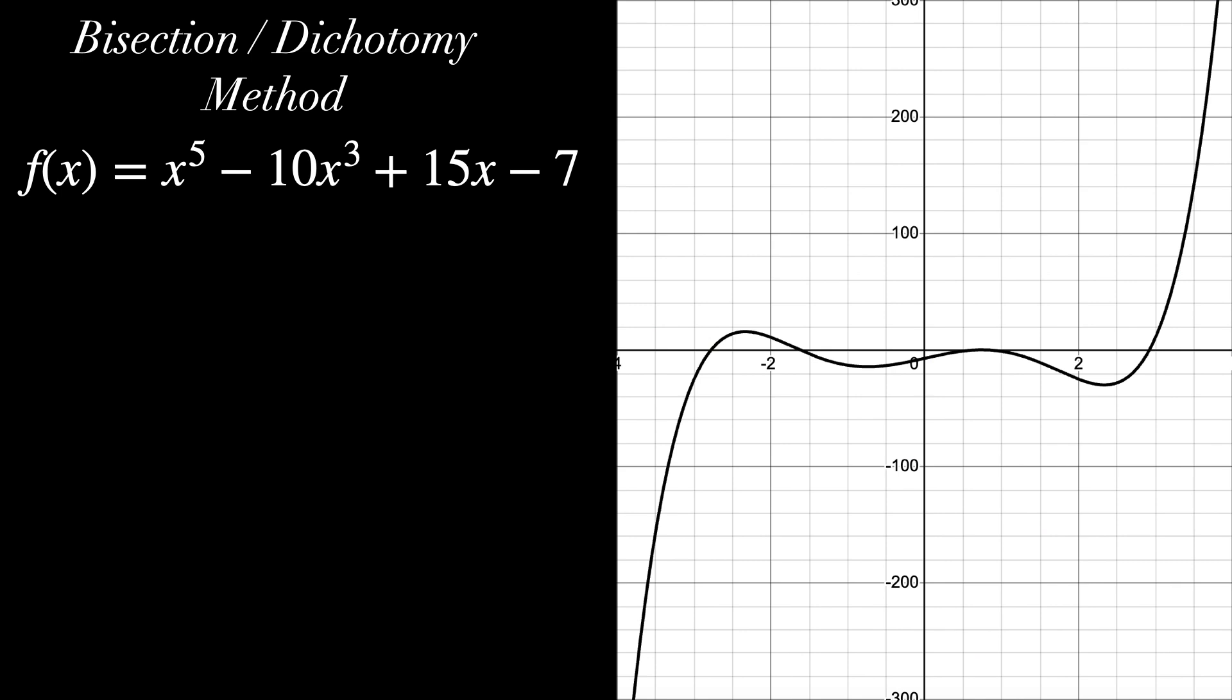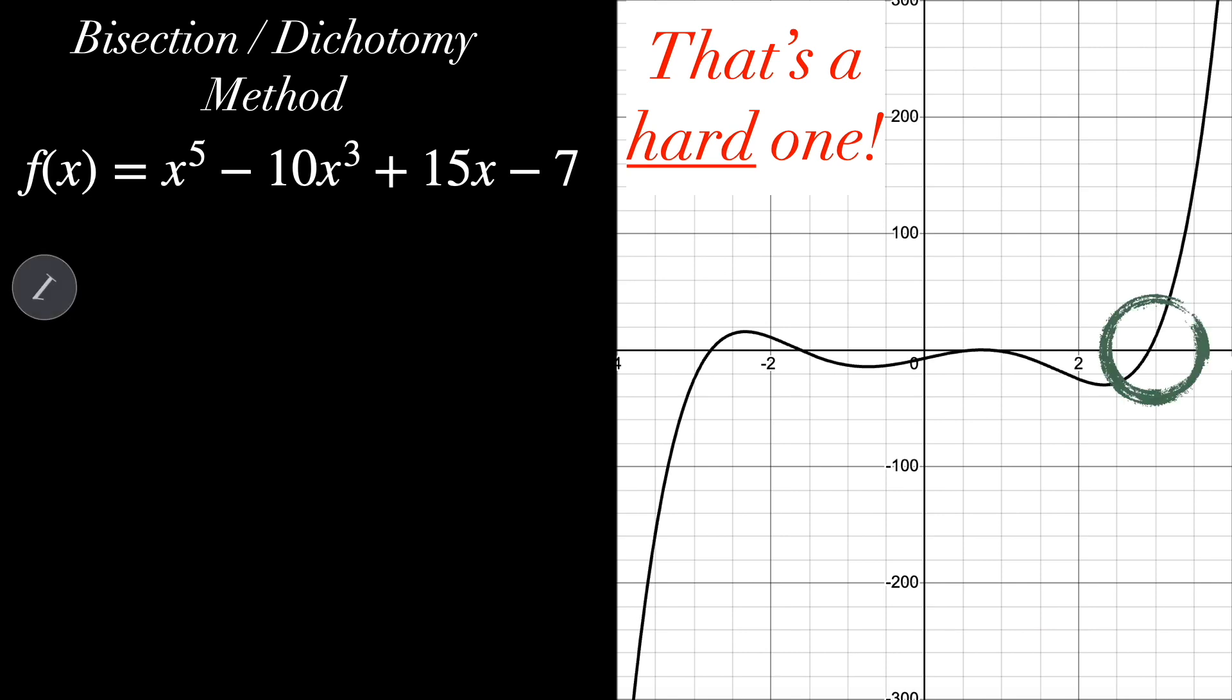Let's see the bisection method or dichotomy method. This is basically a numerical technique to find roots of any continuous function f of x, but within a given interval. We'll see in detail how this method works. So let's see this example here. There are five steps. First one, choose an interval a, b. This interval a, b needs to be such that f of a and f of b have opposite signs. And this can be a little tricky, that's the truth. You need to do it by trial and error.